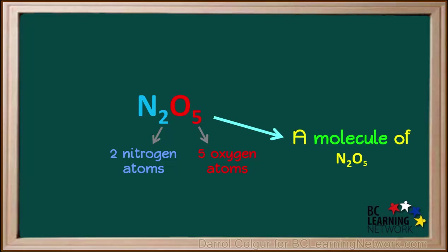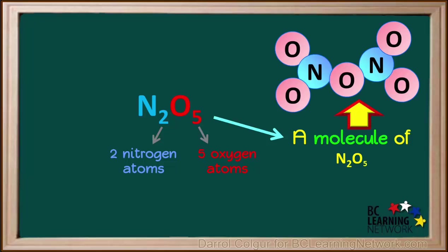A molecule of N2O5 can be represented like this. Notice there are two nitrogen atoms and five oxygen atoms in this molecule.